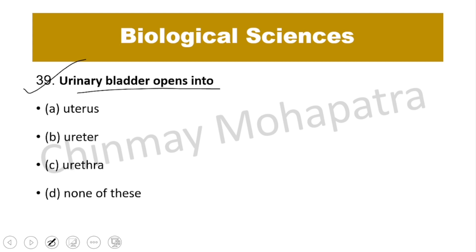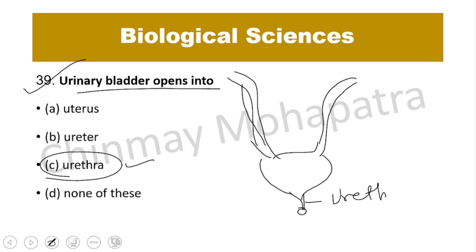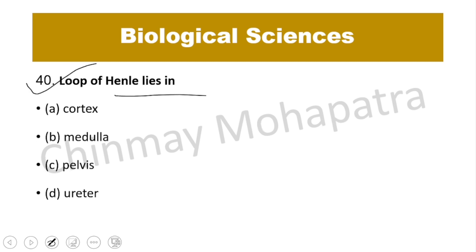Question number 39: The urinary bladder is connected to the kidney via the ureter. Do not confuse ureter with urethra. Question number 40: The loop of Henle lies in the medullary region of the kidney.